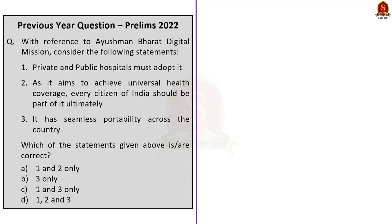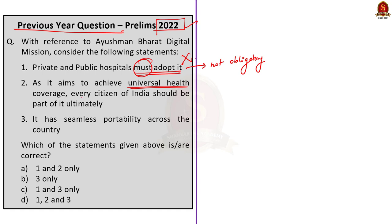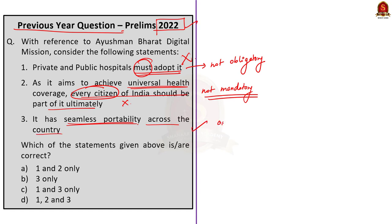Moving on to the third question, which is a previous year question from 2022: with reference to Ayushman Bharat Digital Mission, consider the following statements. Statement 1 says private and public hospitals must adopt it — this is incorrect, as it is not obligatory for hospitals to implement the mission; they can voluntarily do so. Statement 2 says every citizen of India should ultimately be part of it — this is also incorrect, as citizens are not obligated to be part of it. Statement 3 says it has seamless portability across the country — this is correct, since all information is stored online. So the correct answer is option B: 3 only.